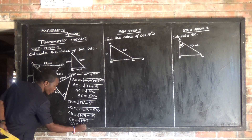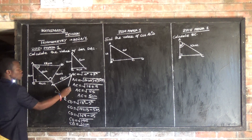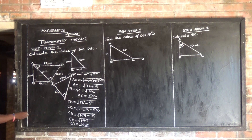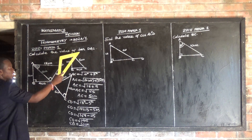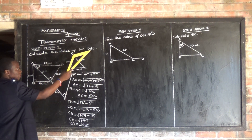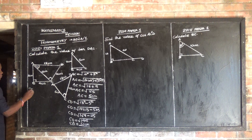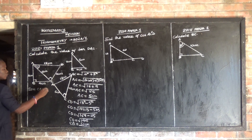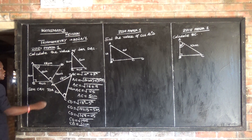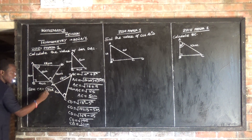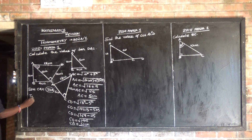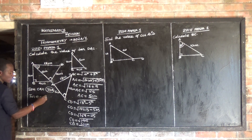So CD equals 12. We are asked to calculate the value of TAN DAC. TAN theta is equal to opposite over adjacent. So now let's identify our opposite and our adjacent in our triangle.